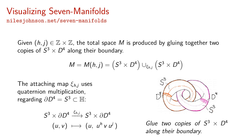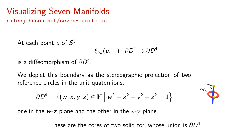The attaching map uses quaternion multiplication, regarding the four-ball boundary as the unit three-sphere in the quaternions. The map CHJ is the identity on S3. The component of CHJ mapping to the four-ball boundary sends U, V to U to the H times V times U to the J. At each point U of S3, CHJ of U is a diffeomorphism of the four-ball boundary.